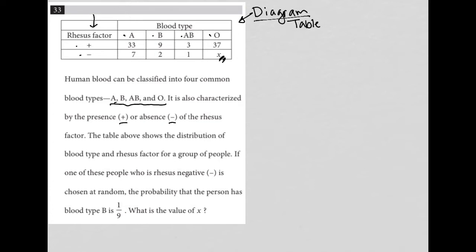The table above shows the distribution of blood type and rhesus factor for a group of people. If one of these people who was rhesus negative, so we're looking at this row for rhesus negative, is chosen at random, the probability that the person has blood type B is one ninth.